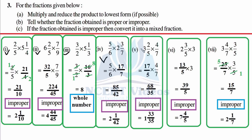Fifth part: 5 threes are 15 plus 2 is 17 over 5, times 4/7 as a multiplication. 17 times 4 is 68, and 7 times 4 is 28. 4 plus 2 is 6, 7 fives are 35 — again improper because numerator is greater than denominator. 35 ones are 35, remainder 33, giving the mixed fraction 1 and 33 over 35.